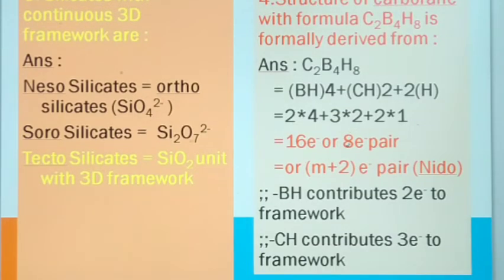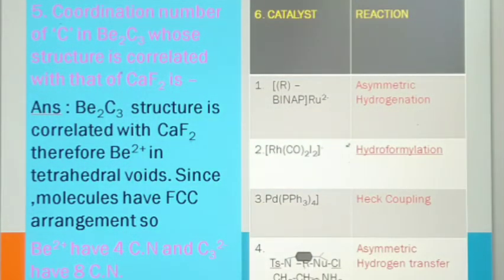Next question: Be2C3, the diberyllium tricarbide structure. They are saying it is correlated with the calcium fluoride structure. You have to tell about the coordination number of carbon only, not beryllium. As we know, it is correlated with calcium fluoride - Be2+ similar structure, so Be2+ here, Ca2+ - they occupy tetrahedral voids and it resembles face-centered cubic structure. Be2+ will have 4 coordination number and carbide will have 8 coordination number. So answer will be 8 for carbon only.